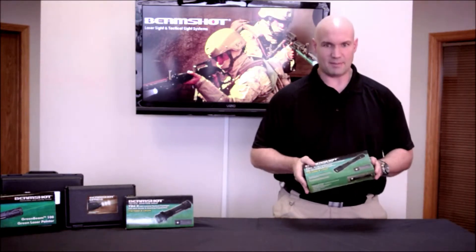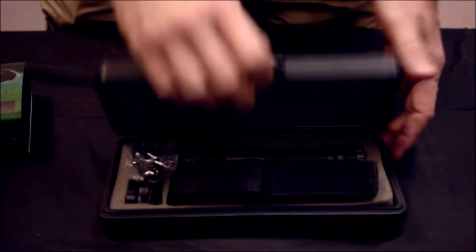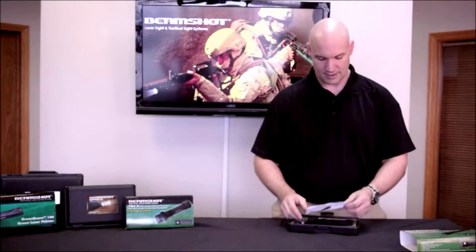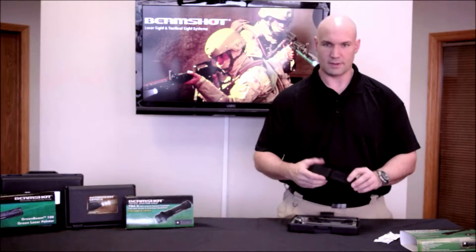Each of these lights comes neatly packaged in a hard plastic case. Basically what you have inside the case is your instructions, warranty information, and a nylon holster for carrying the thing on your belt.